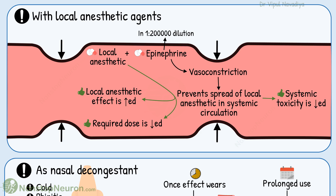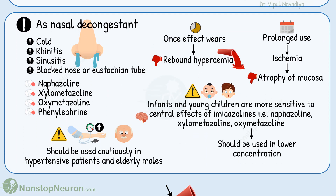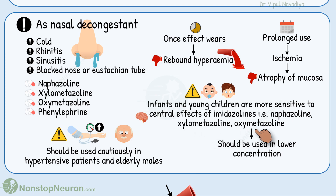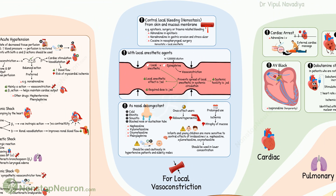Now let's talk about the use of adrenergic drugs as nasal decongestants. They are used for colds, rhinitis, sinusitis, and blocked nose or eustachian tubes. Drugs commonly used are naphazoline, xylometazoline, oxymetazoline, and phenylephrine. There are several disadvantages: once their effect wears off, there is rebound hyperemia, and on prolonged use, ischemia leads to atrophy of mucosa. Infants and young children are more sensitive to the central effects of imidazolines, which include naphazoline, xylometazoline, and oxymetazoline, so they should be used in low concentration in these groups. They should also be used cautiously in hypertensive patients and elderly males.